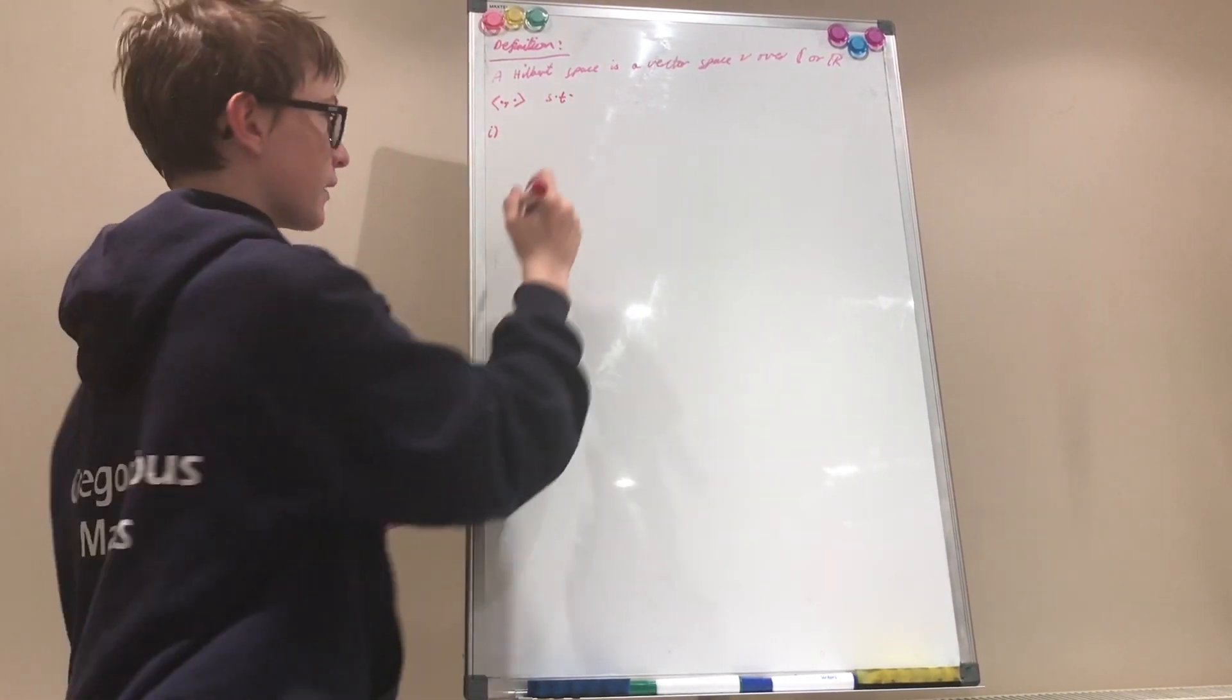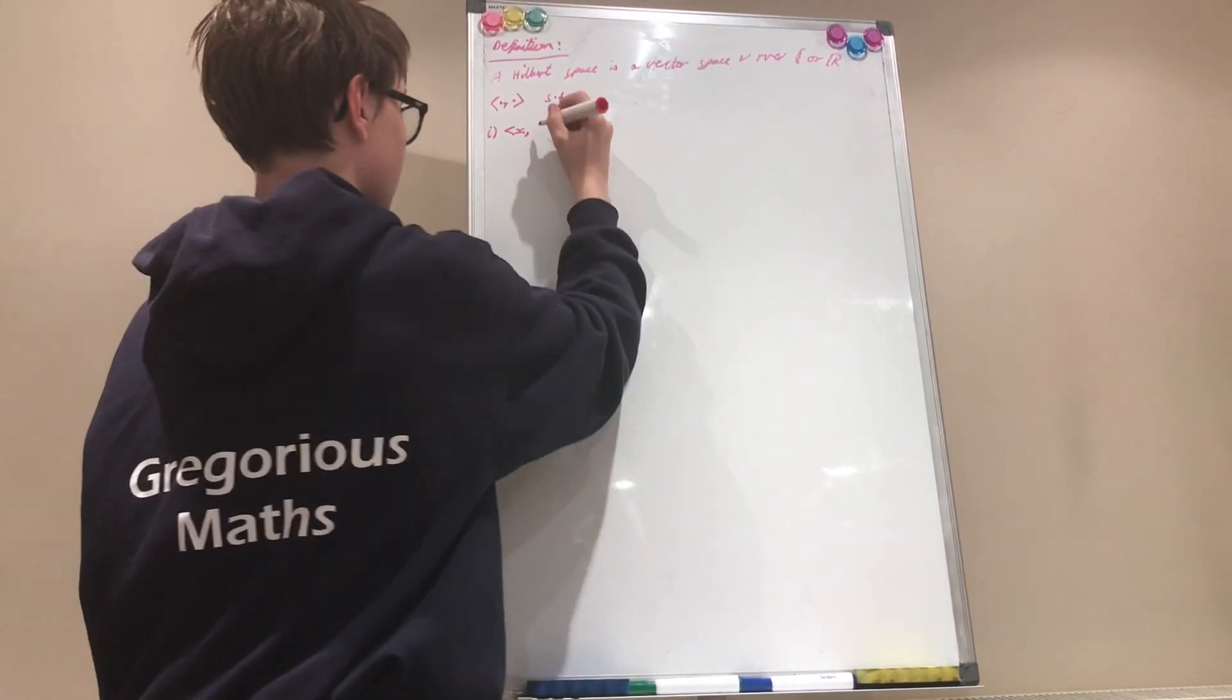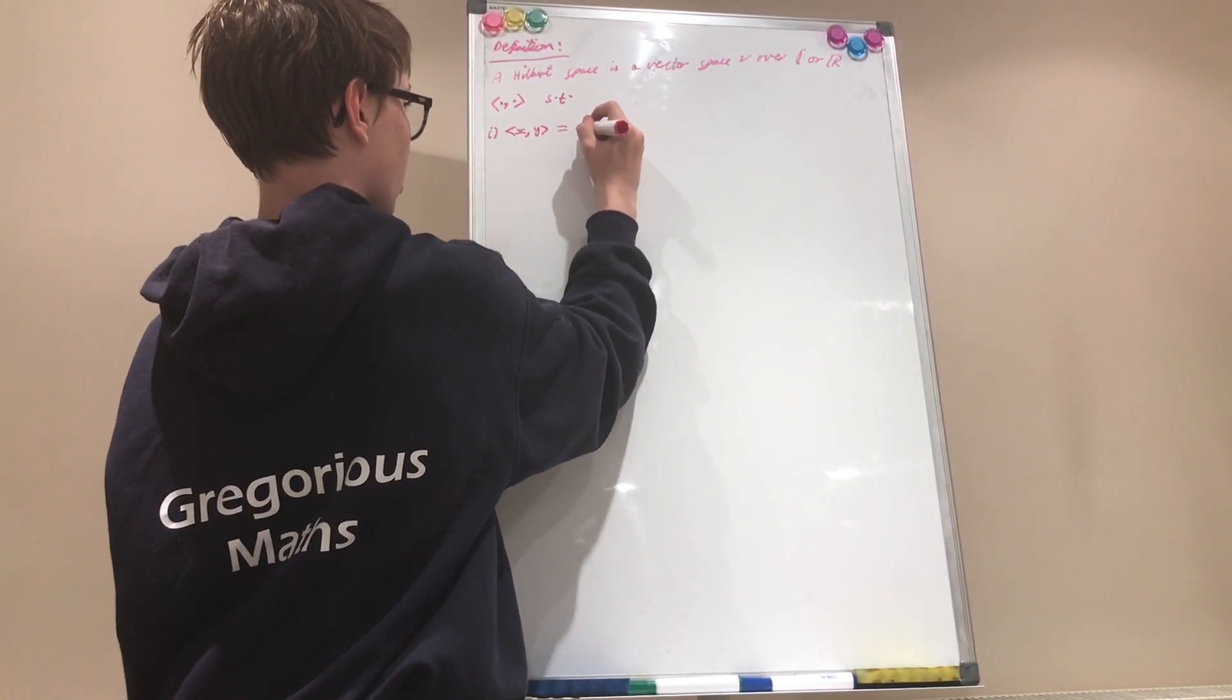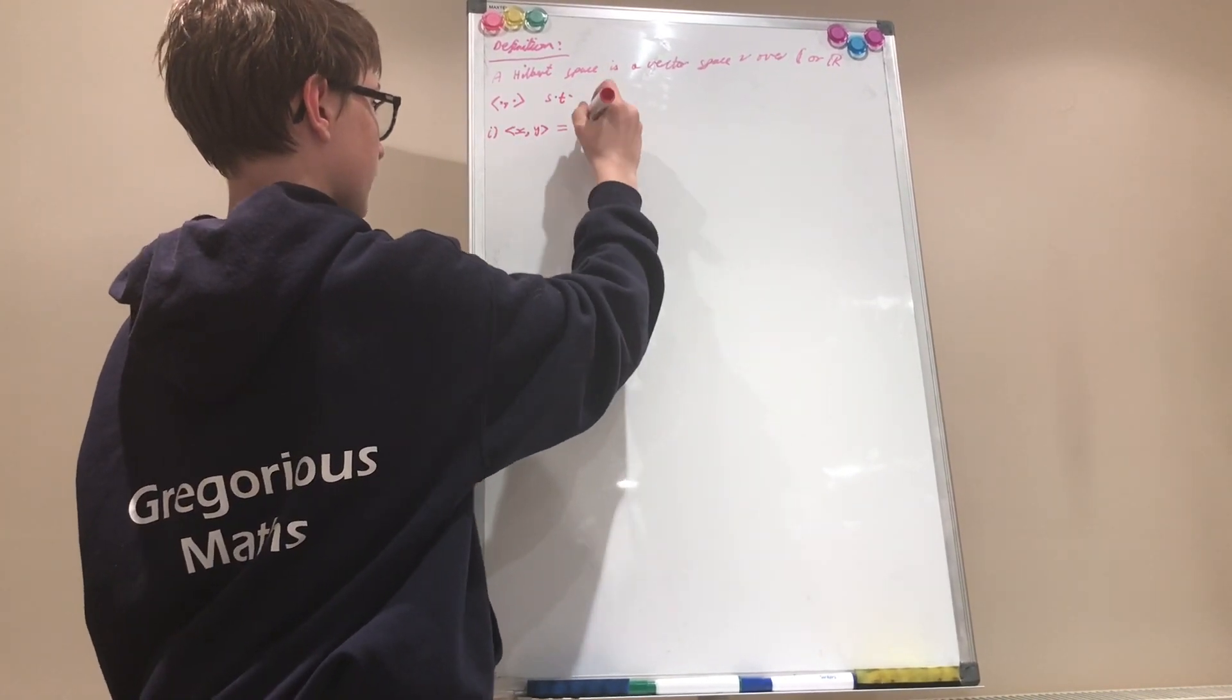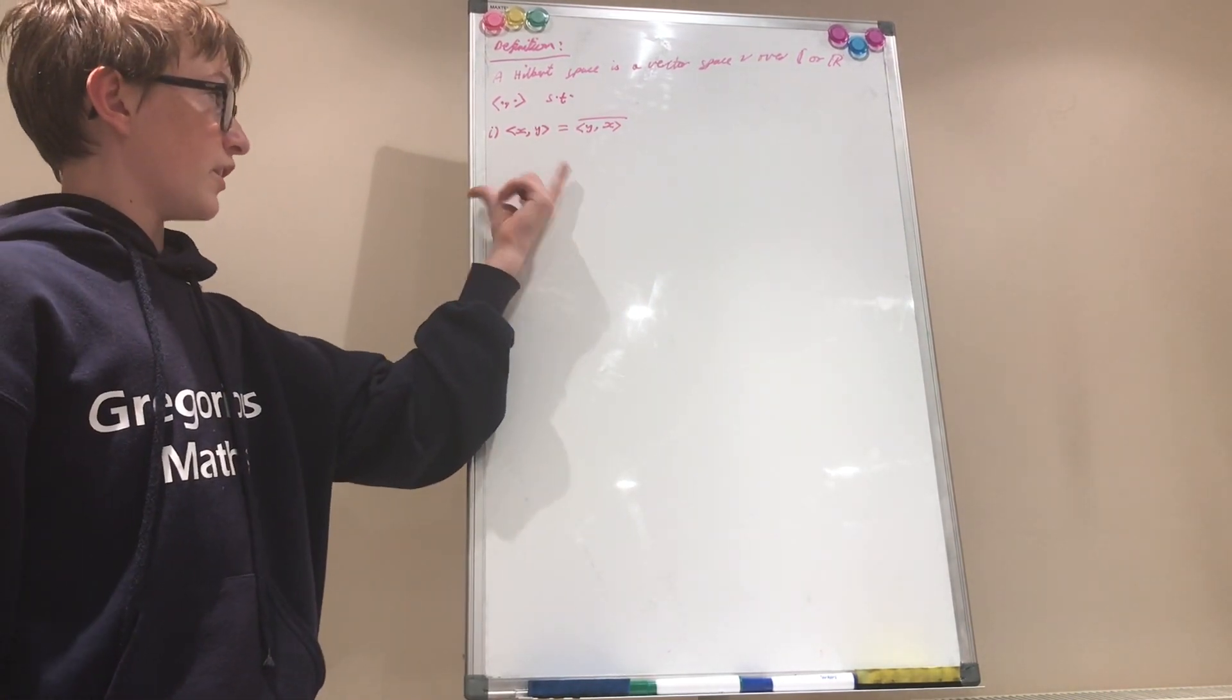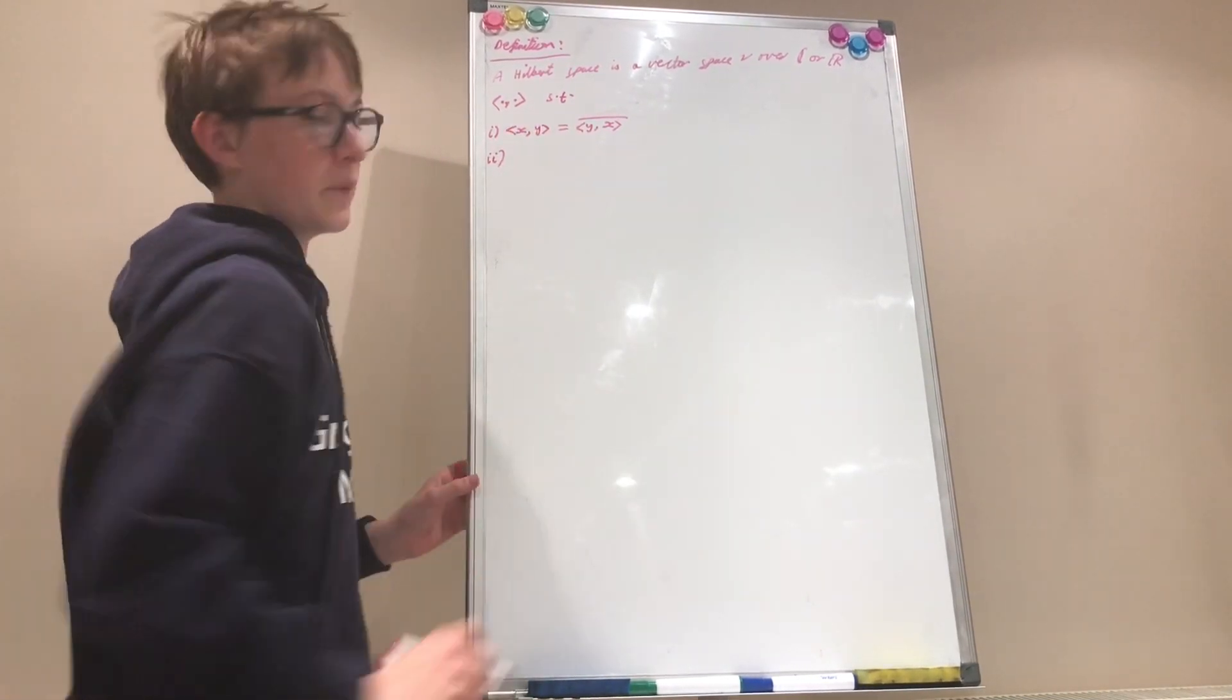So the first one is slightly different because we're also dealing with C now. So x inner product y is equal to y inner product x conjugate. Let me just draw that nice conjugate. Because we're dealing with C, it's symmetric under conjugation.